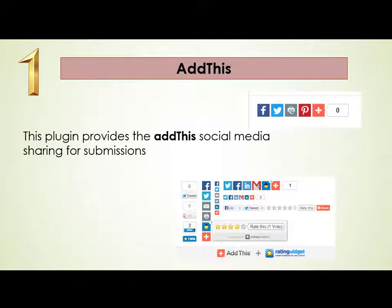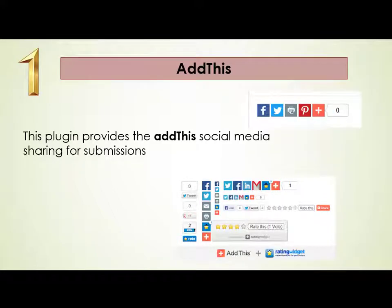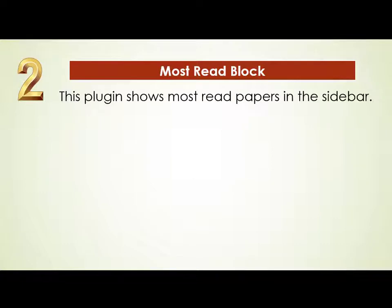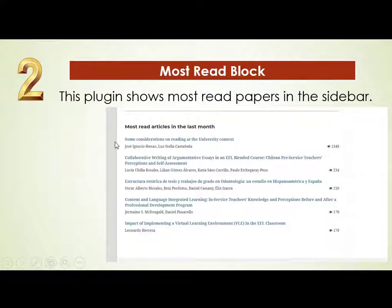AddThis is one of the most important plugins because it increases viewership, which in turn increases citations as well. The second important plugin is the Most Read Block. This shows the most-read papers in the sidebar, which you may have seen in various OJS journals. It shows readers and potential authors what kinds of articles have been read over the last week, month, or year.